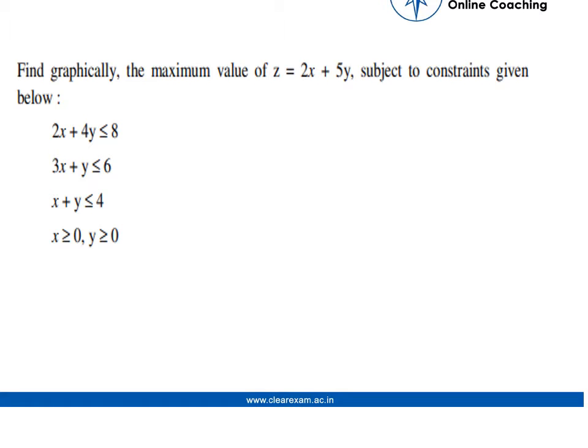So here the first constraint is 2x plus 4y is less than equal to 8, 3x plus y is less than equal to 6, x plus y is less than equal to 4 with x greater than equal to 0 and y greater than equal to 0.